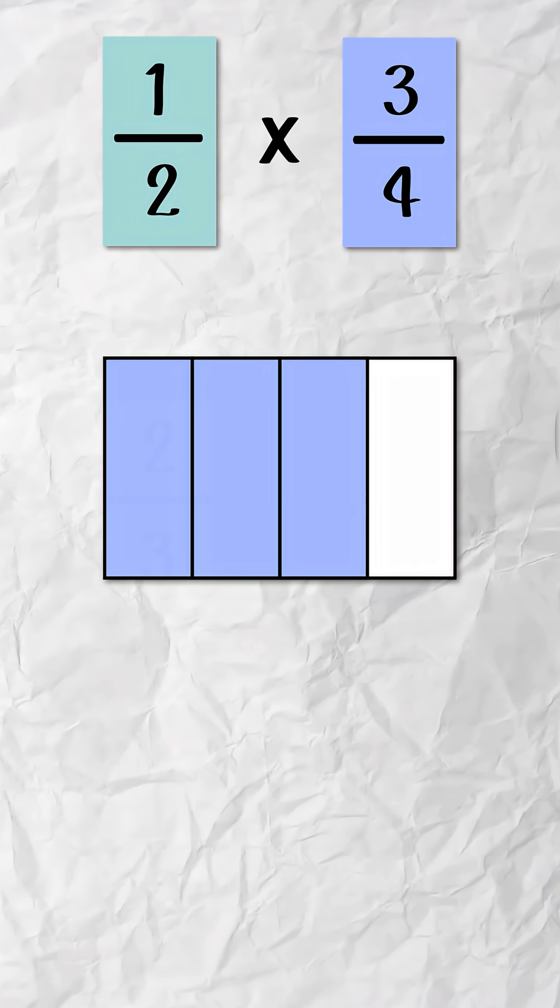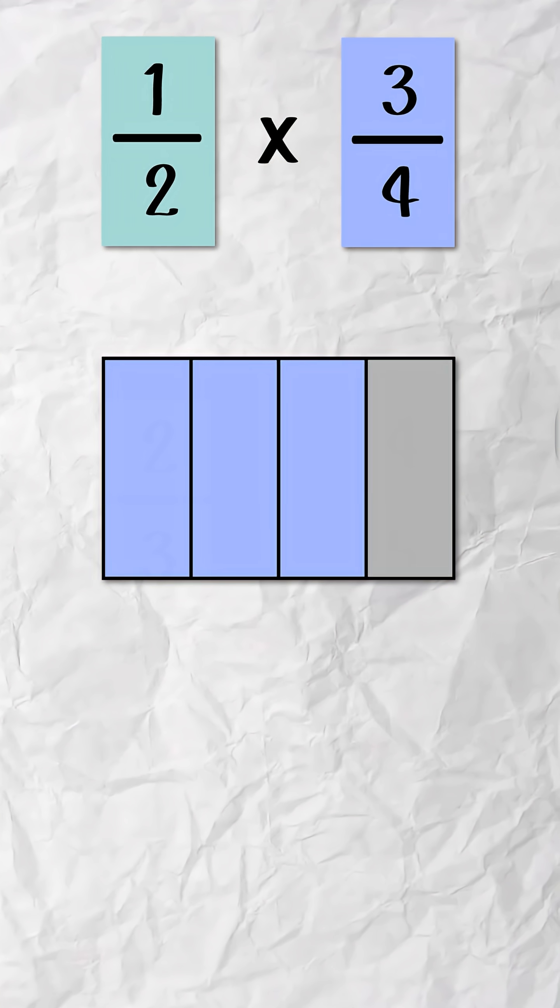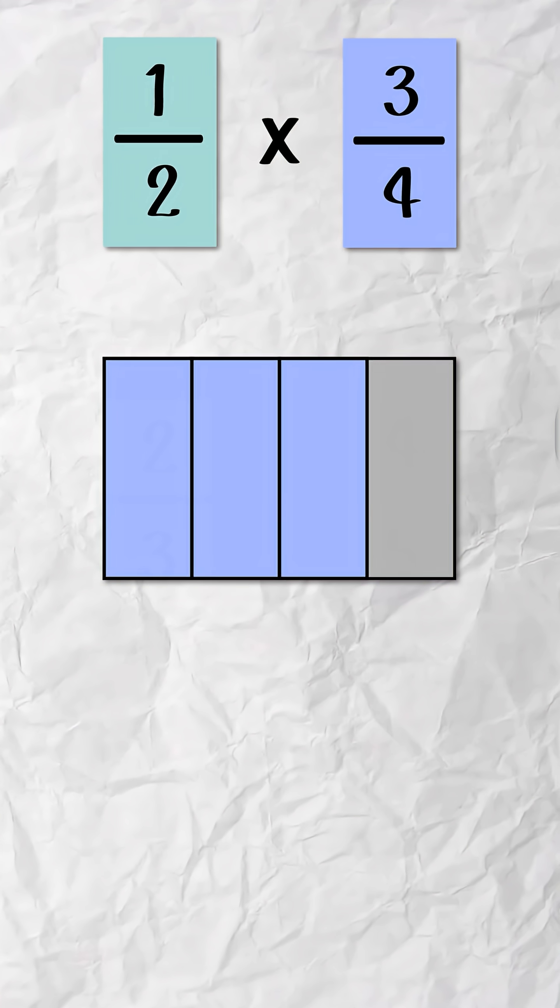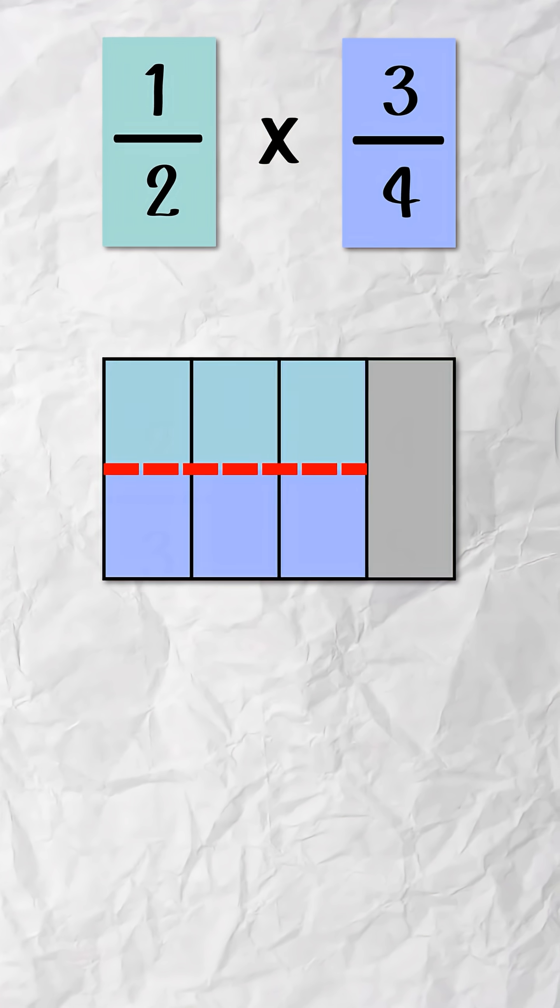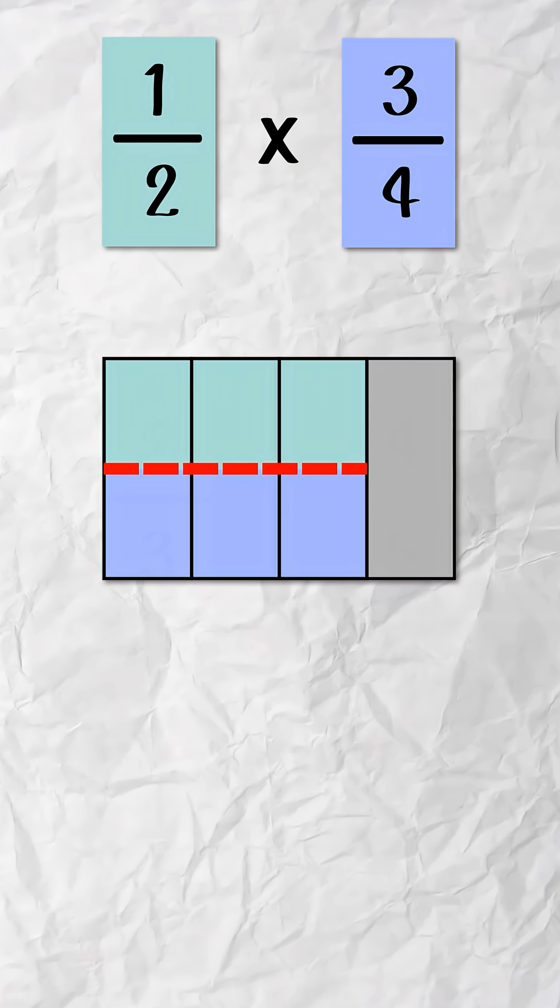So one-half of three-fourths means we're taking half of that amount. So we need to split the shaded section into two equal groups, because the denominator of one-half is two, and take one of them, because the numerator is one. What do we have now?